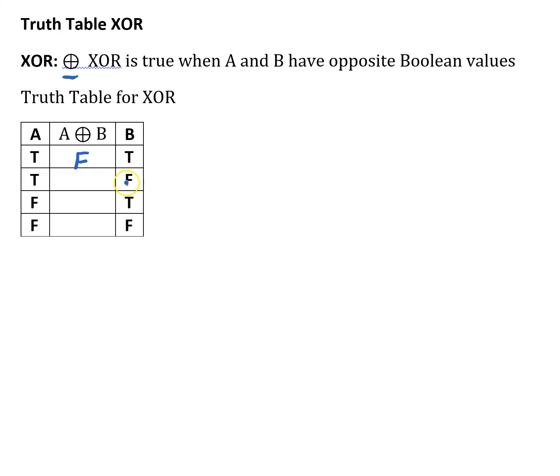When A is true and B is false, those are opposite values, so this becomes a true statement. When A is false and B is true, we have opposite values, so this is true. When A is false and B is false, they are the same value, so this is a false statement.